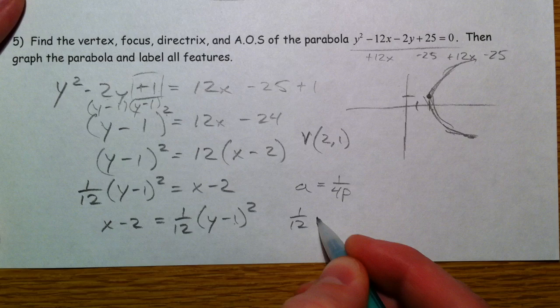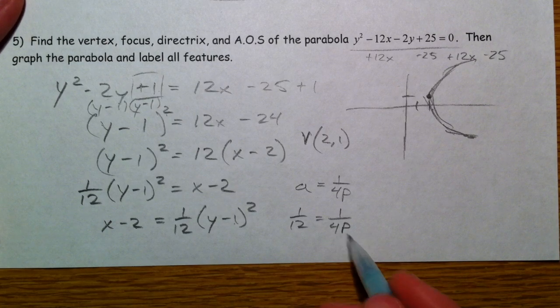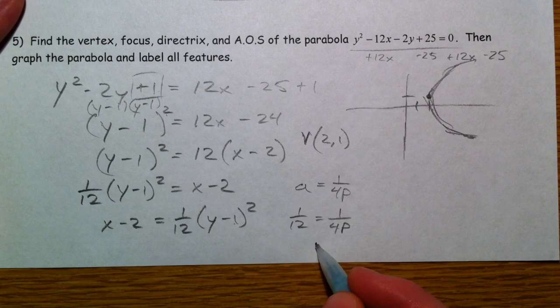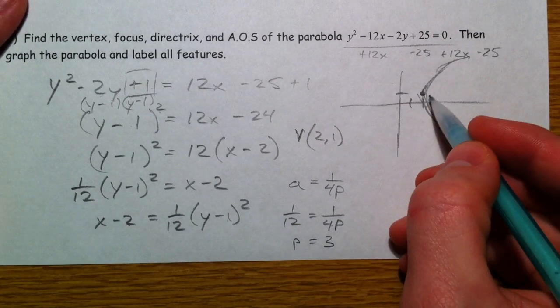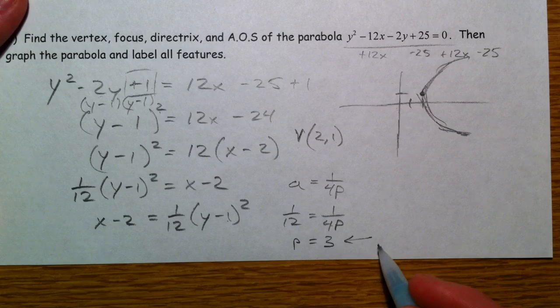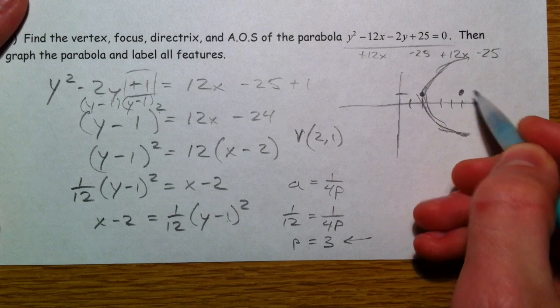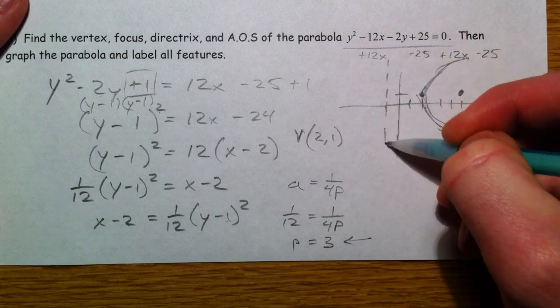And so a equals 1 over 4p. So 1/12 equals 1 over 4p. So at this point in time, well, how does 12—how do you get 12 out of 4 times p? p has to equal 3. So then p is the distance from the vertex. And so what we're going to do is go 1, 2, 3 to the right, and 1, 2, 3 to the left. And that's going to be our directrix.